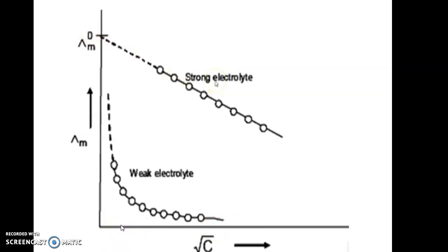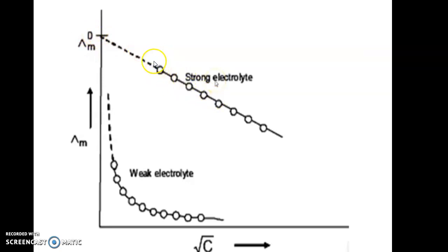Initially, at low concentration — that is, high dilution — molar or equivalent conductance is high. In the case of a strong electrolyte, it reaches a limiting value, known as the molar conductance at infinite dilution. On the graph, the line touches the y-axis, reaching this limiting value.